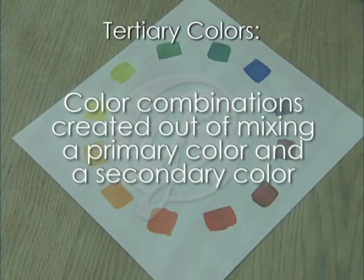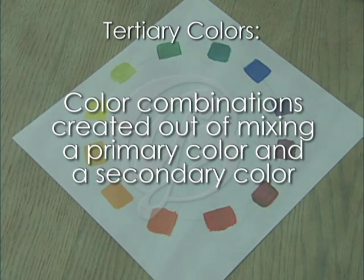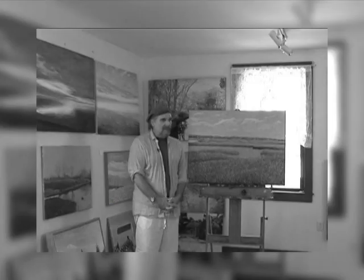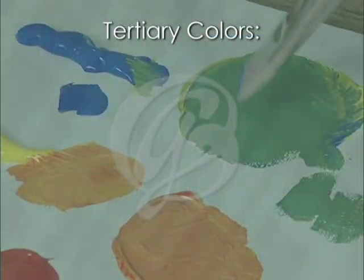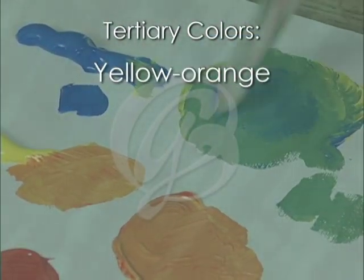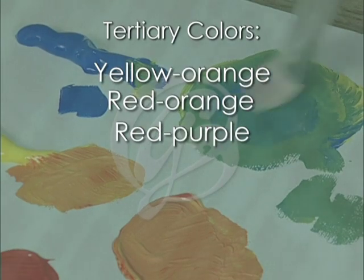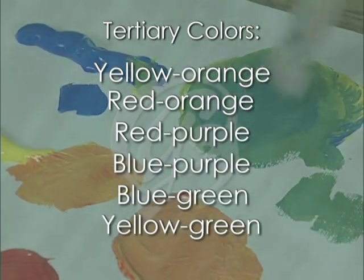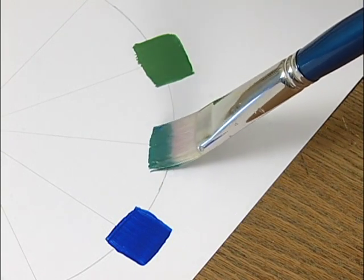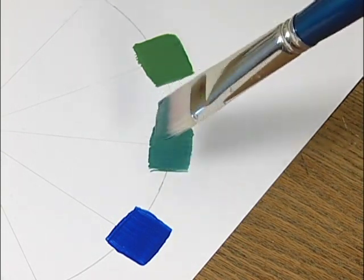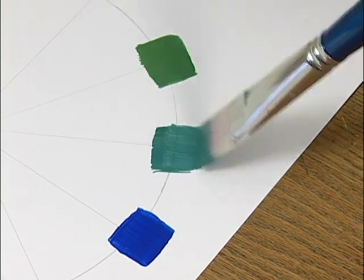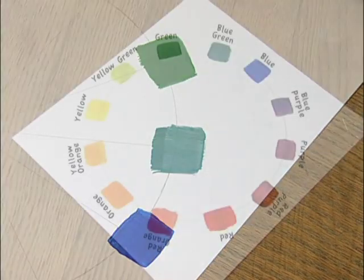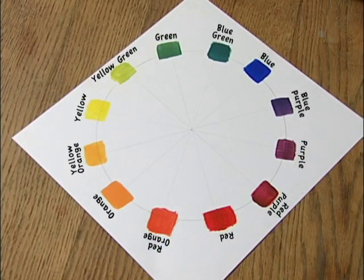Tertiary colors are the color combinations created out of mixing a primary color and a secondary color, and these colors are given a two-word name describing their parents. The tertiary colors are yellow-orange, red-orange, red-purple, blue-purple, blue-green, and yellow-green. Finish your color chart by mixing and painting the tertiary colors in the appropriate spaces. When your color chart is completed, it will look like this.